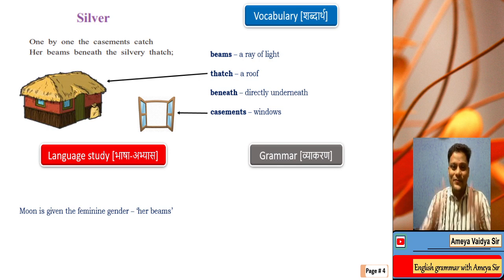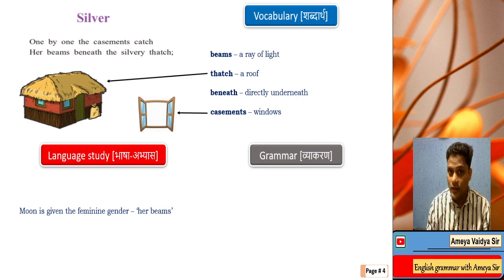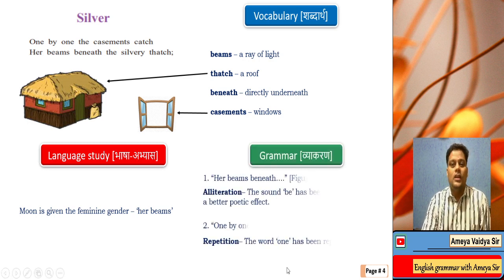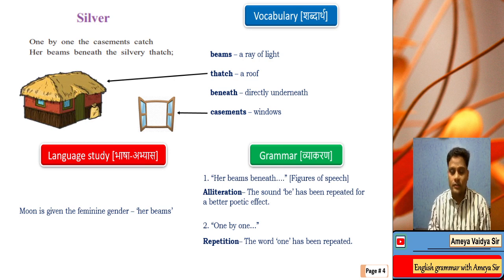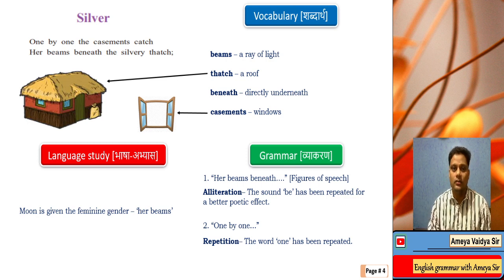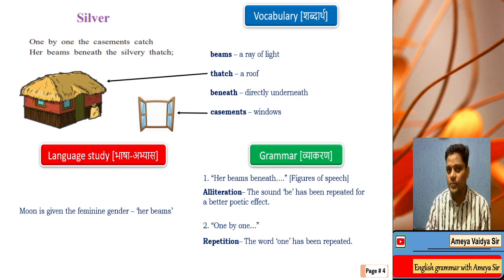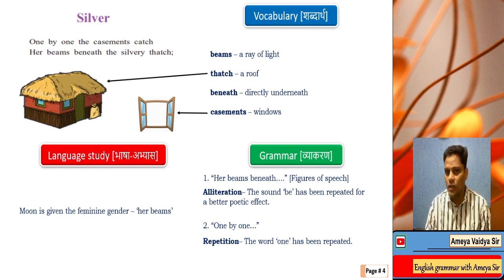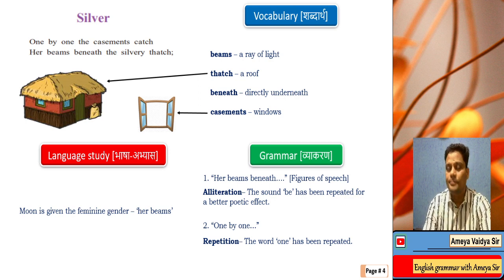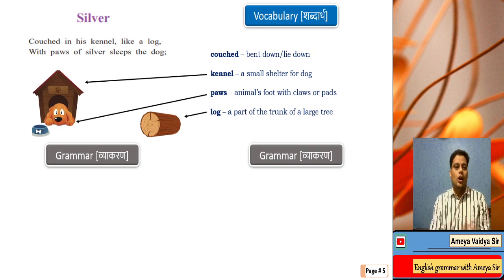For figures of speech in this couplet: 'her beams beneath' is alliteration because the sound B is repeated. 'One by one' is another example of repetition. New vocabulary learned here includes 'casements' meaning windows and 'thatch' meaning a roof, plus 'shoon' — an archaic term from an earlier couplet.